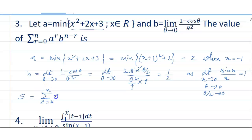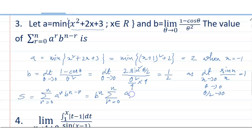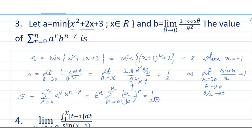Now the question is: S equals summation r equals 0 to n of a to the power r times b to the power (n minus r). This equals b to the power n times summation r equals 0 to n of (a by b) whole to the power r. Substituting b equals half, meaning 2 to the power n.